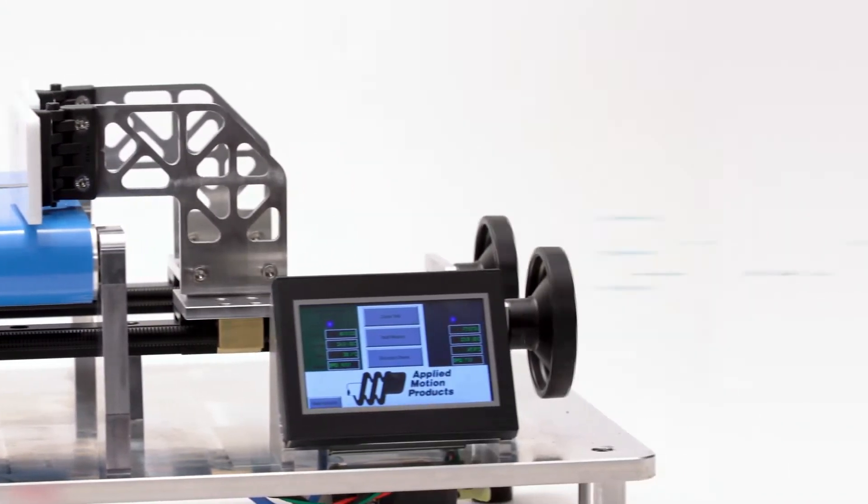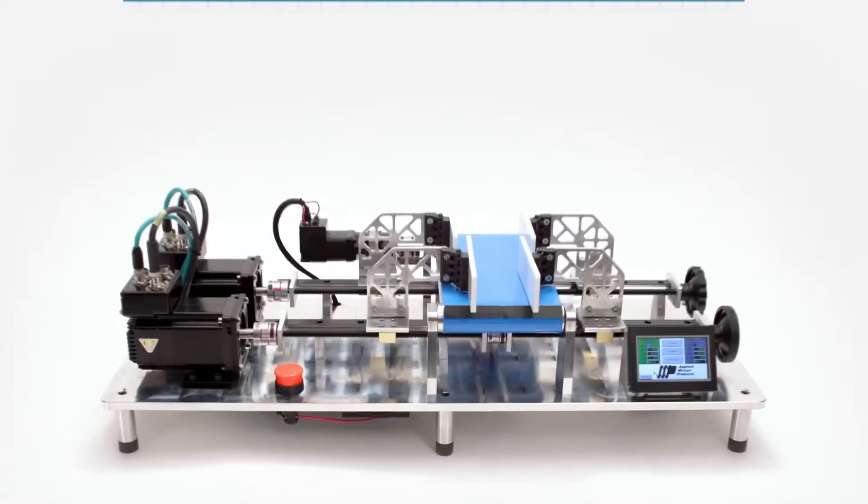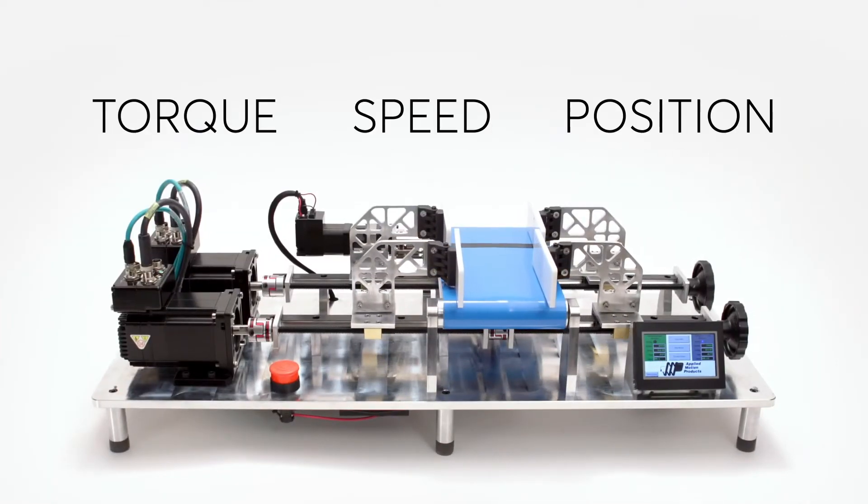Encoders are a critical component of a motion control system, providing real-time position information to the motor's controller, which uses the information to accurately control torque, speed, and position.